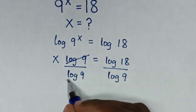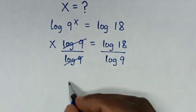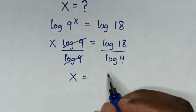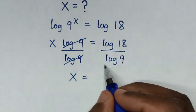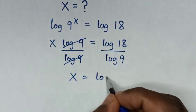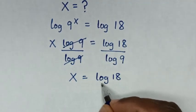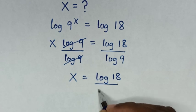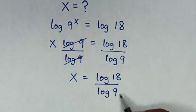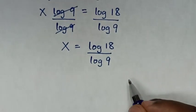So these will cancel. Then it will be x is equal to log of 18 over log of 9.